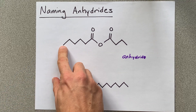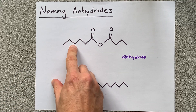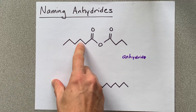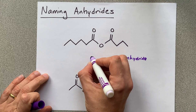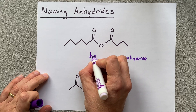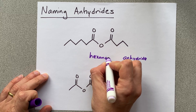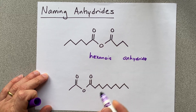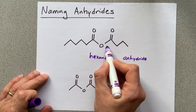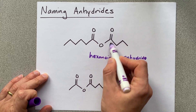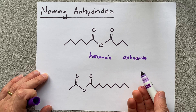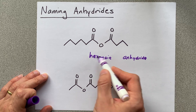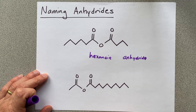This one is one, two, three, four, five, six carbons long, and so it's going to be hexanoic. If there was an H here instead of all this other stuff, it would have been hexanoic acid, and instead we're going to call it hexanoic anhydride.